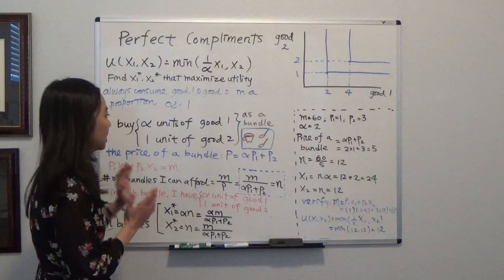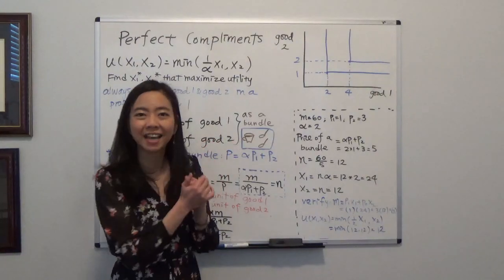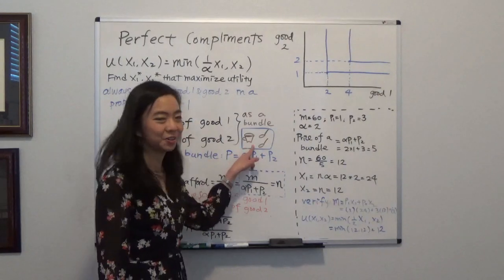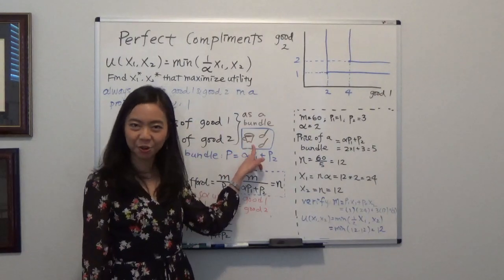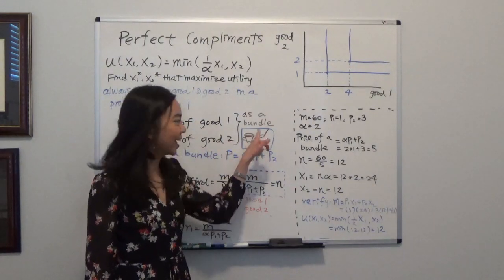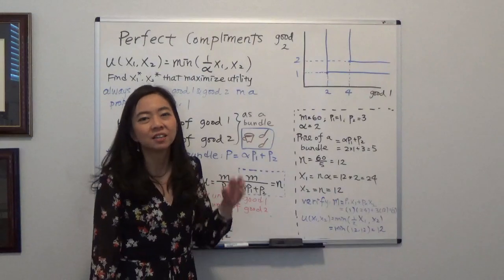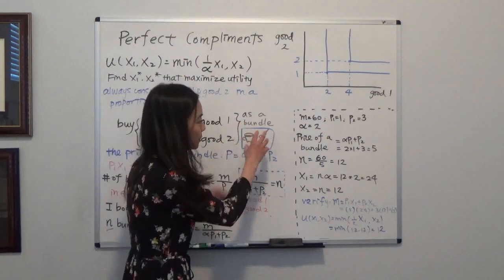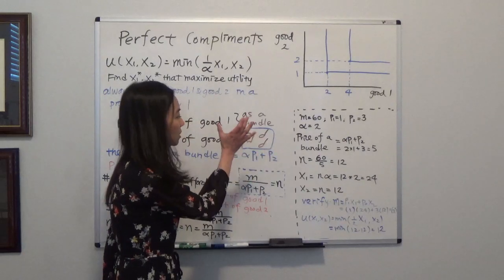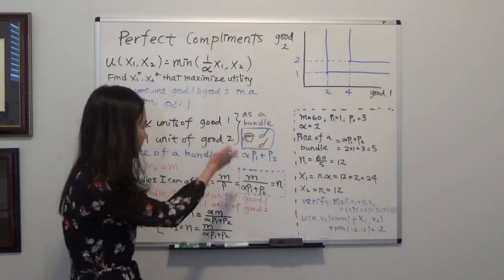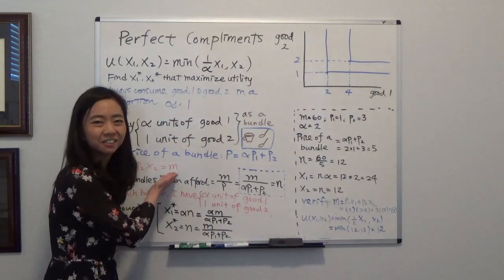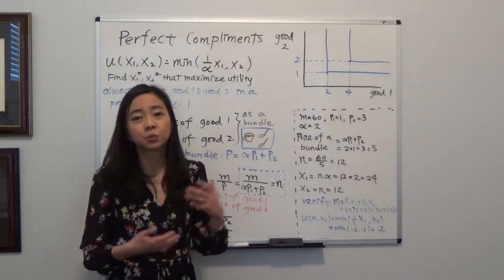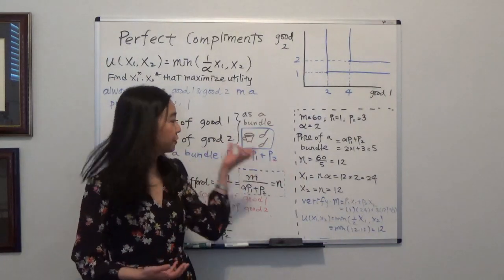Here's the idea: since you always consume them together — imagine alpha is two — that will be your perfect cup of coffee with one cup of coffee and two spoons of sugar. You consume that as a bundle; you always consume them together. So you might think, given my budget, how many bundles can I purchase?